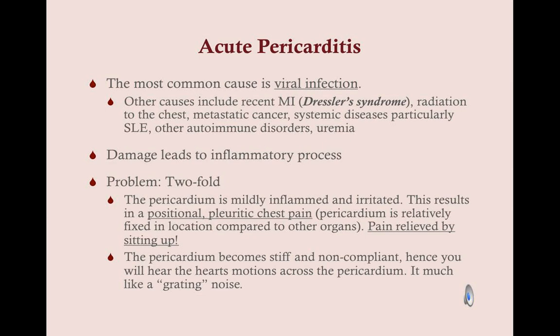The most common cause is idiopathic, but the most common identifiable cause is a viral infection. Other causes involve damage leading to an inflammatory process, and there are really two problematic outcomes. First, when the pericardium is inflamed and irritated, there are nerves around it, and inflammatory mediators around nerves create pain. That pain is positional and pleuritic, and located in the chest because the pericardium is in the chest.